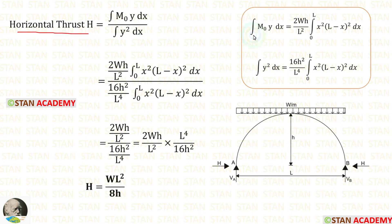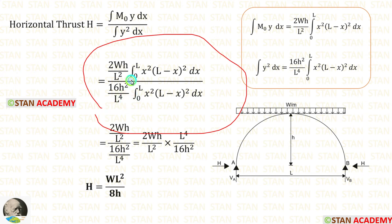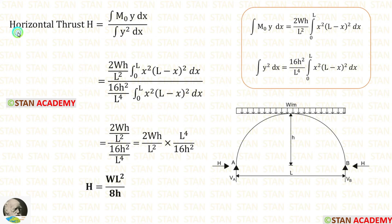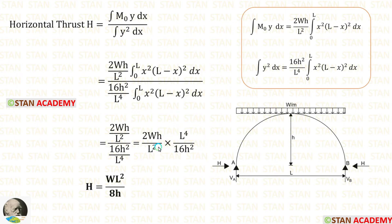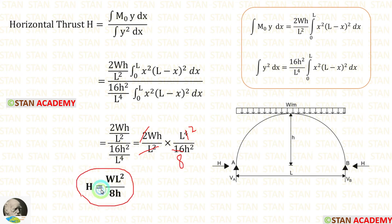In the horizontal thrust formula, we apply the values of both integrals. The common integration term cancels. Taking 16h²/L⁴ inversely and multiplying, we eliminate L² terms and simplify further. The numerical factors reduce — 16 and 2 give 8. Finally, the horizontal thrust H is equal to WL² by 8h.